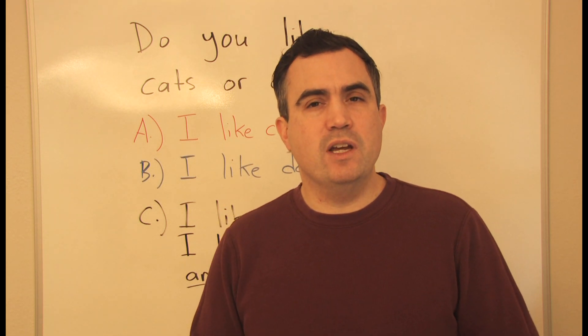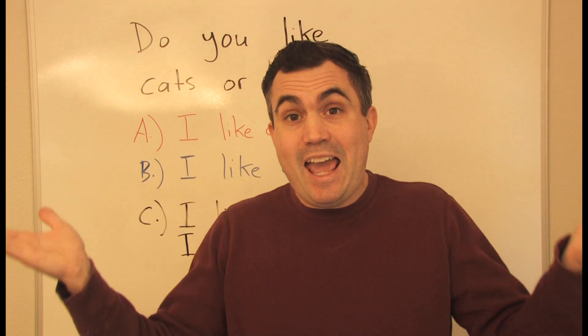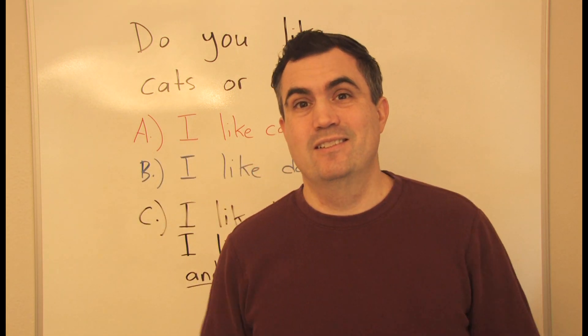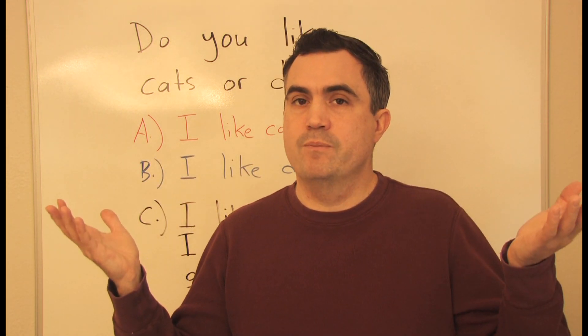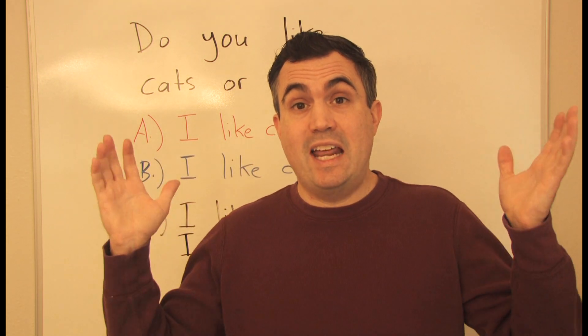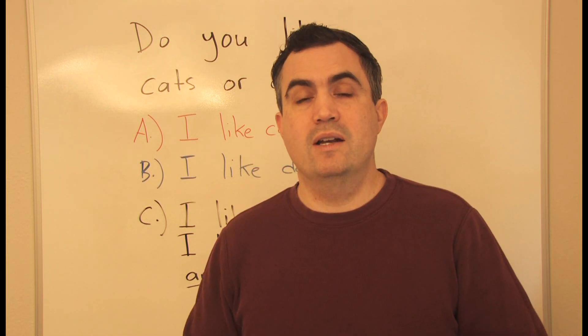Can you see the difference between or and and? So with or, we choose one or the other. With and, we can have both or more than one together.